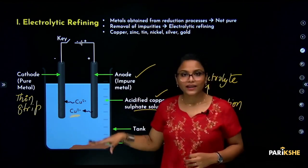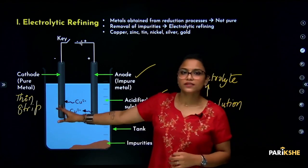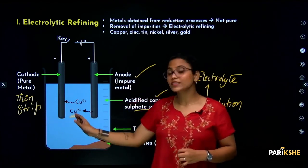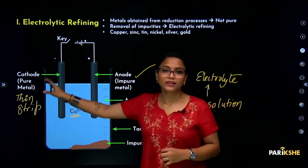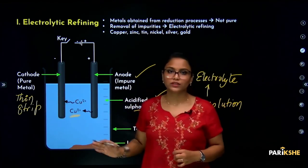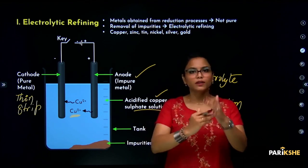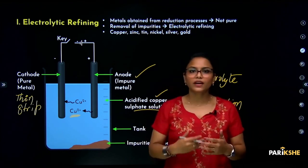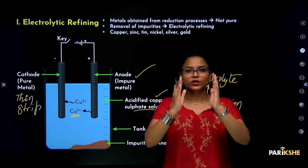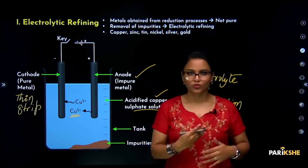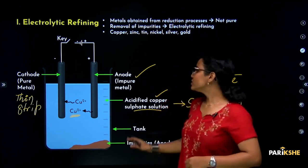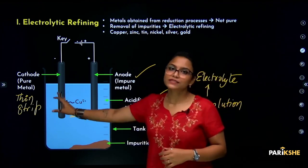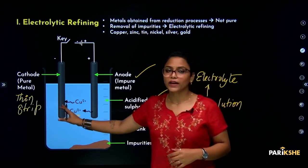In the same way, we have a thin strip of cathode — a thin strip of pure metal — which is called cathode. In this process, metals are purified.